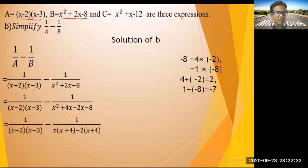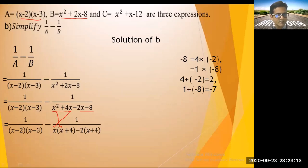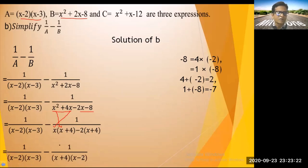Group and factor: x(x + 4) - 2(x + 4) = (x + 4)(x - 2). So 1/B = 1 / [(x + 4)(x - 2)]. Now we have: 1/[(x - 2)(x - 3)] - 1/[(x + 4)(x - 2)]. We need to find the LCM of the denominators.